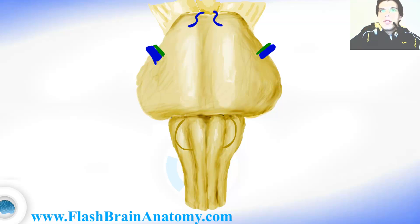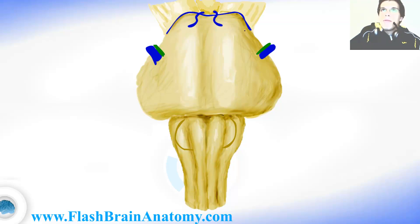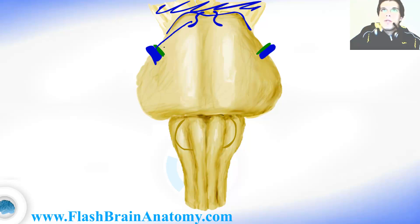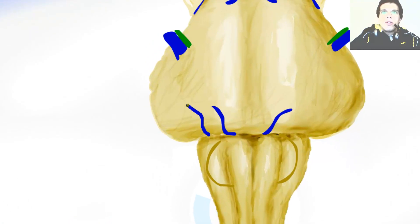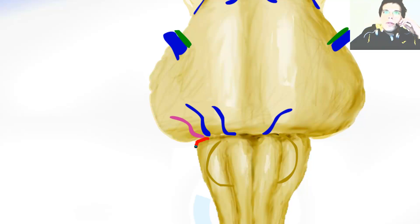This is the border between the pons and the medulla, and this was the border between the mesencephalon — the midbrain — and the pons. From this border we have the abducens nerve coming out, then the facial nerve, the vestibulocochlear nerve, and the glossopharyngeal nerve.